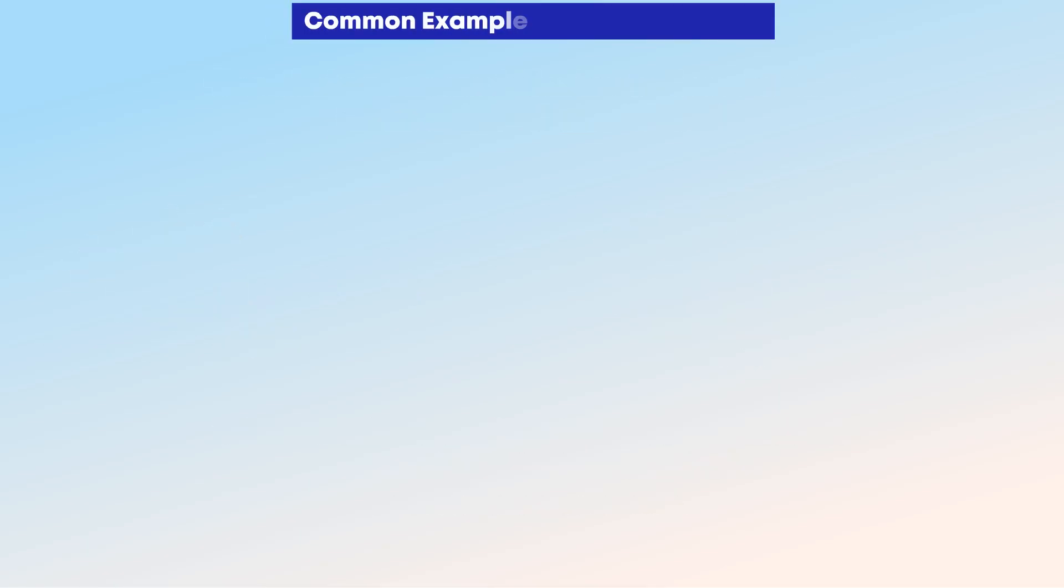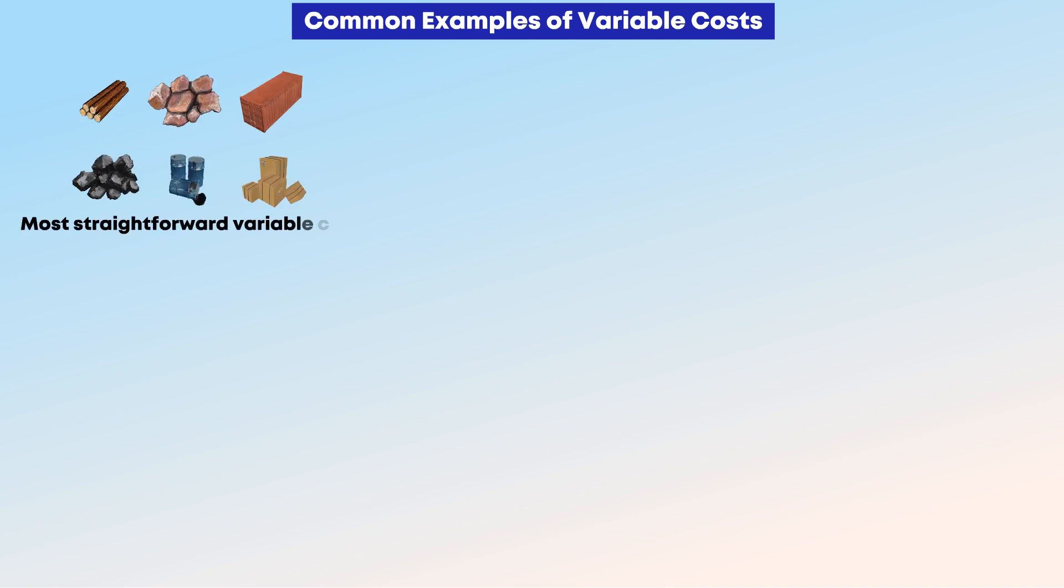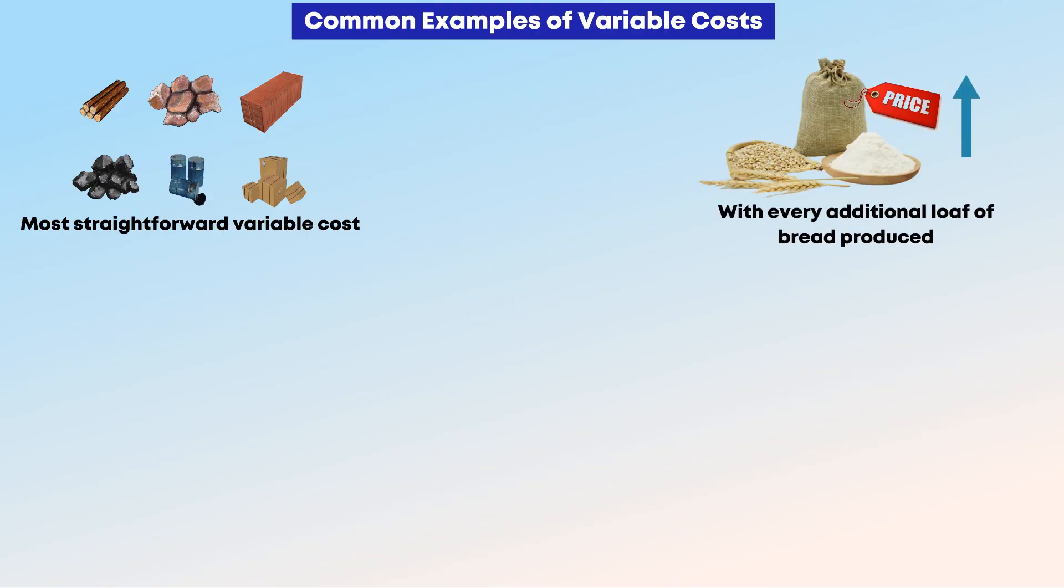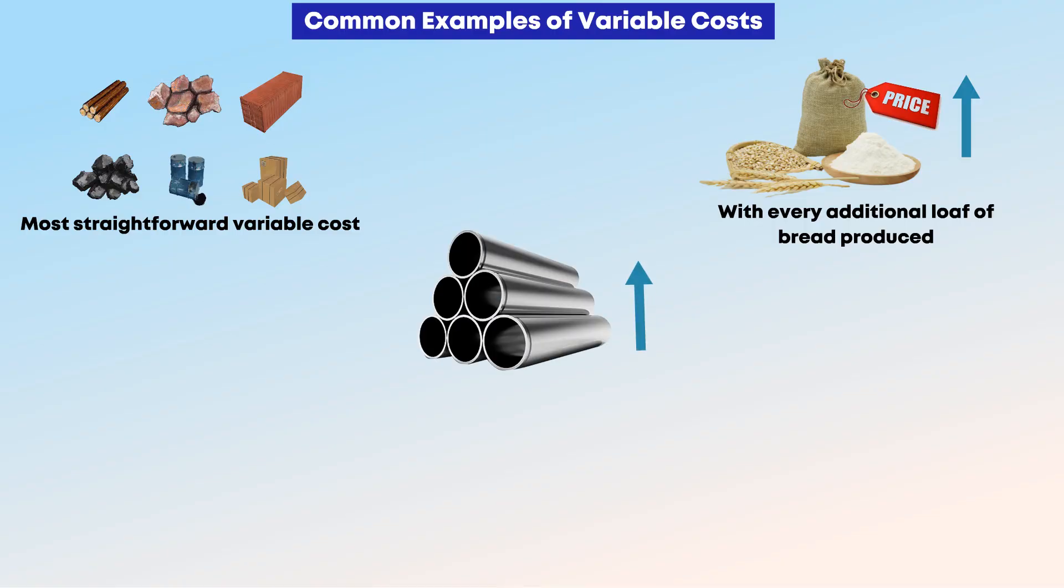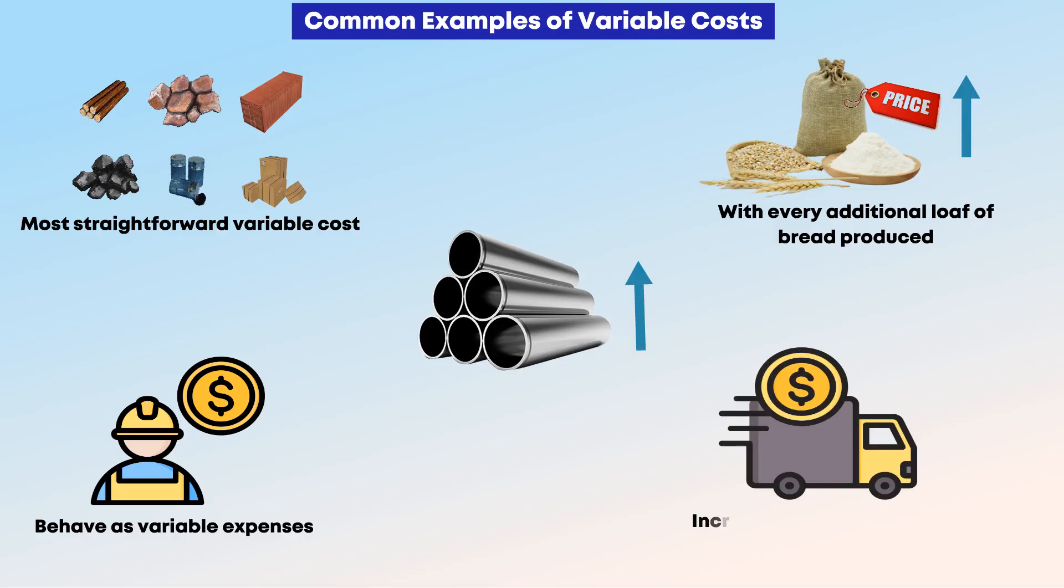Common examples of variable costs: Raw materials represent the most straightforward variable cost. A bakery's flour costs increase with every additional loaf of bread produced. Similarly, a manufacturing company's steel costs rise with each additional product manufactured. Also, hourly labor costs often behave as variable expenses. Shipping and packaging costs increase with each item sold.